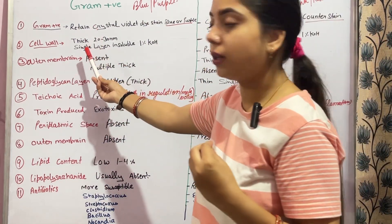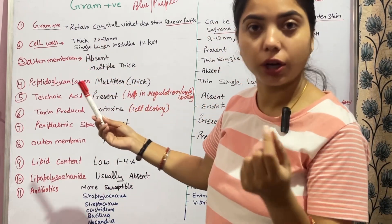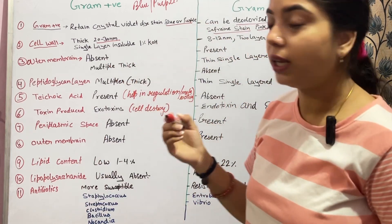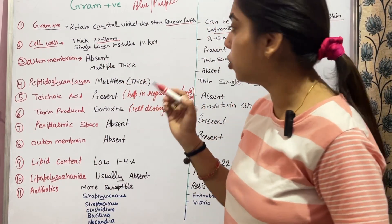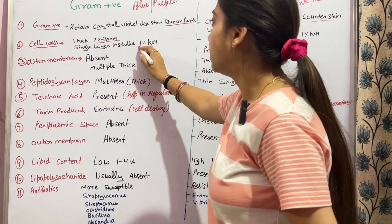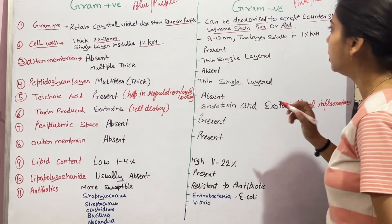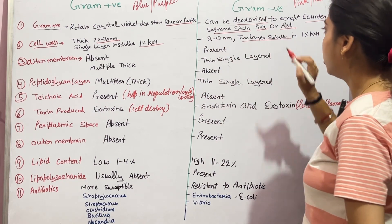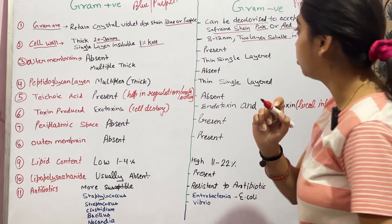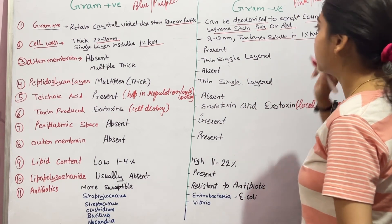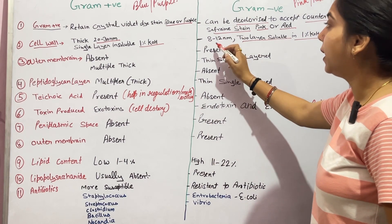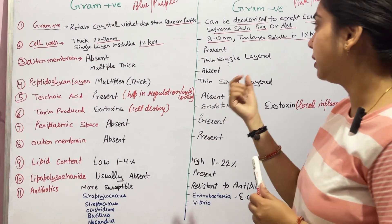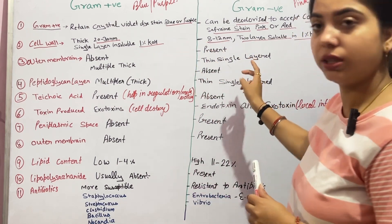Now let's talk about the cell wall. Gram positive bacteria have a thick cell wall — the thickness is around 20 to 30 nanometers — and it is a single layer that is insoluble in 1% KOH. In gram negative bacteria, there are two layers in the cell wall, with a thickness of 8 to 12 nanometers, making it comparatively thin.